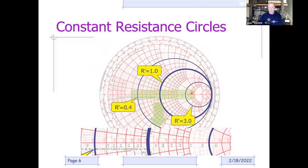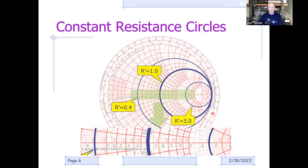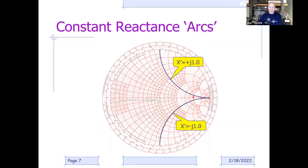If we expand on the prime axis, we can see the 1.0 running along that circle, the 0.4 circle, and the 3.0 circle. The numbers—2, 1.8, 1.6, 1.4—give you the normalized resistive component represented by each circle. All of these represent what we call constant resistance.